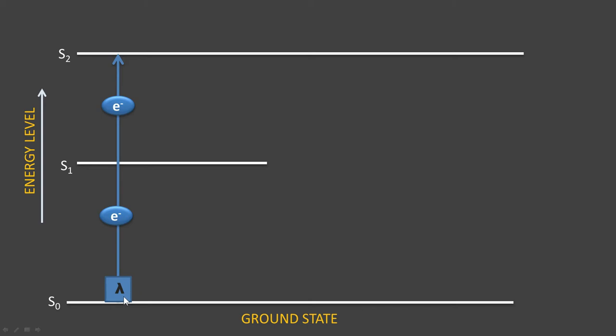If blue wavelength light is given, the electron goes up to the S2 state. When it comes back, it releases its energy in the form of heat. When we give red light, it just reaches the S1 state because wavelength